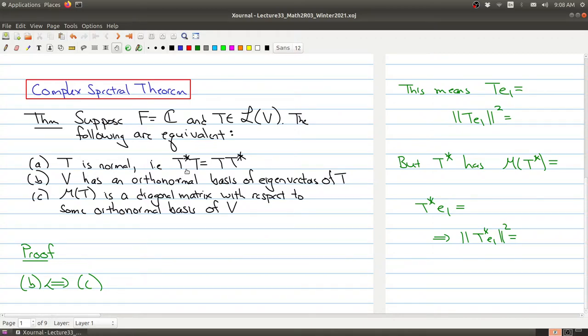The operator is normal, meaning T composed with the adjoint is the same thing as the adjoint composed with T. The next thing is that V has an orthonormal basis of eigenvectors of T. And the third thing is that the associated matrix is a diagonal matrix with respect to some orthonormal basis of V.